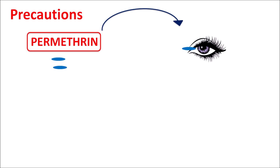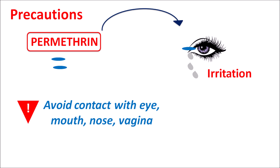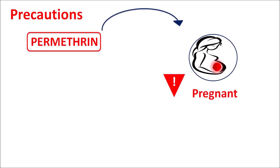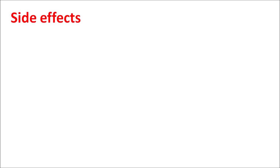When permethrin is accidentally applied onto the eye, it can produce eye irritation. Therefore, when this drug is used, avoid contact with the eye, mouth, nose, and vagina, where it can produce irritation and itching. Similarly, this drug can produce some difficulty in breathing, which is more important in patients with asthma, so it should be used carefully in patients with asthma or any respiratory disorders. This drug should also be carefully given to pregnant women and breastfeeding women. It is not indicated for infants with age less than two months.